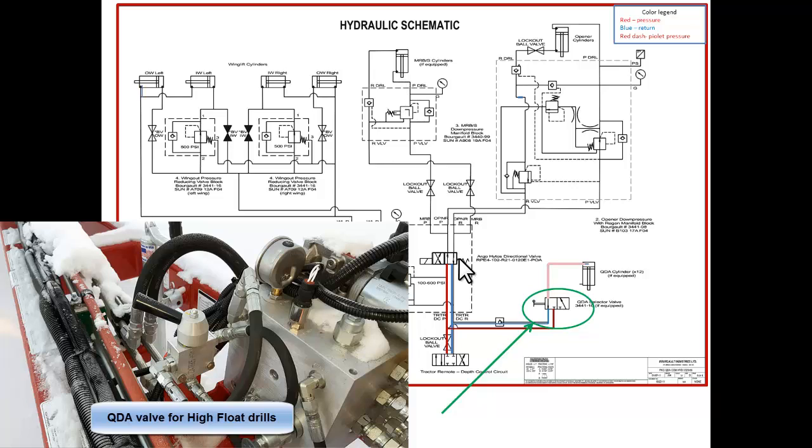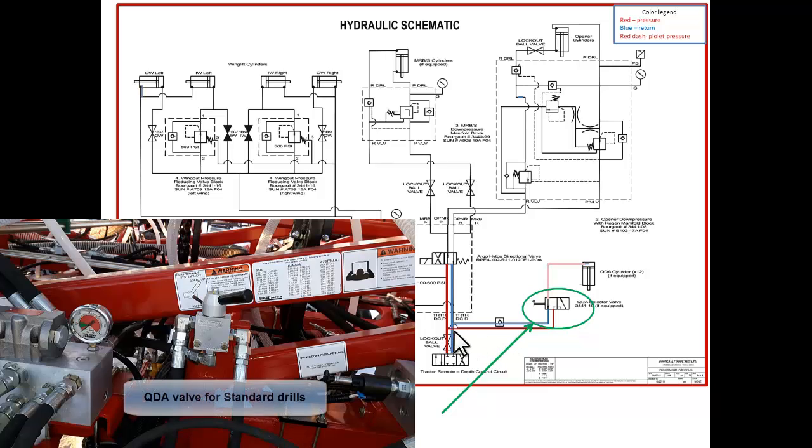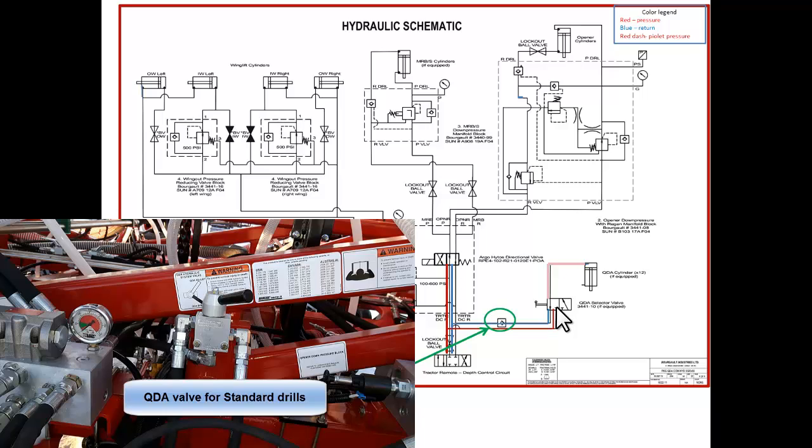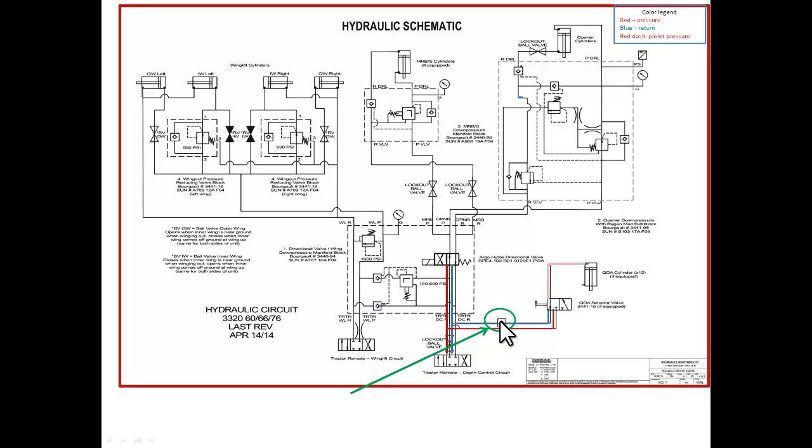If the drill is equipped with QDA, Quick Depth Adjust, there will be a pressure and return oil split off before the opener directional control valve and sent to the QDA valve. Active pressure goes to a QDA valve. On the return side we have a check valve. This prevents you from running the oil in the wrong direction. So if our opener circuit was engaged in the wrong direction and our blue line was now our pressure line, we would lock the oil and our QDA selector valve would not work to raise the QDA cylinders. Good way to verify you're in the correct direction.